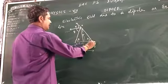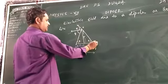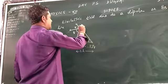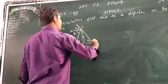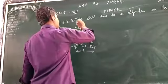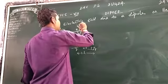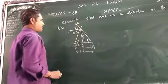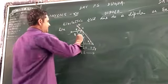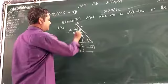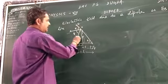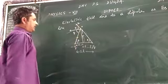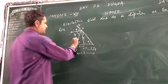The electric field due to the positive charge will act away from the charge — so this is E. And for the negative charge, the electric field will act towards the charge, so it is also E.